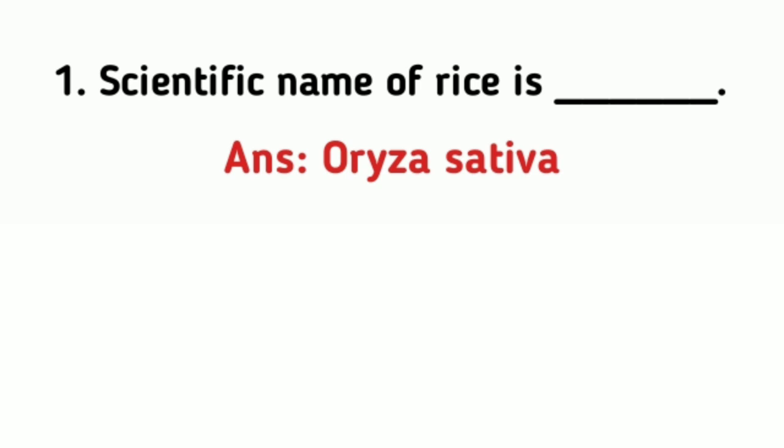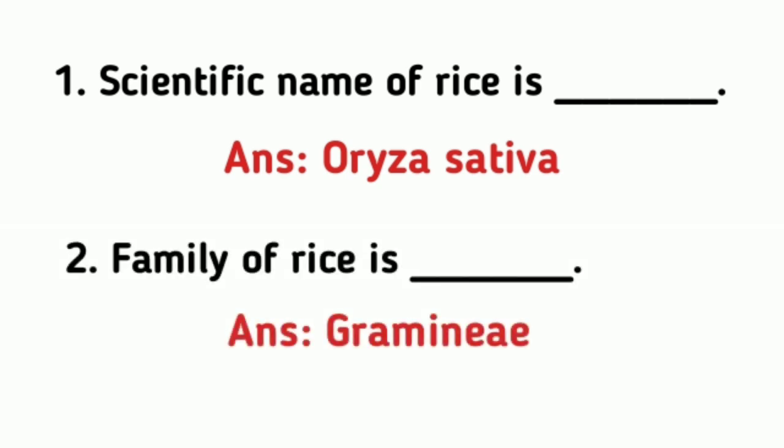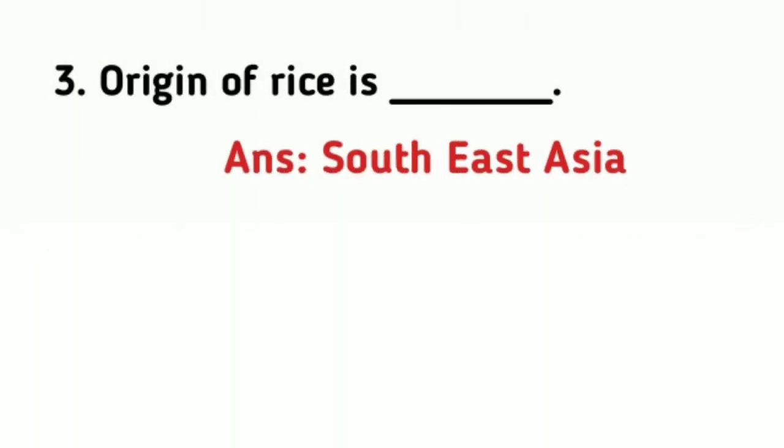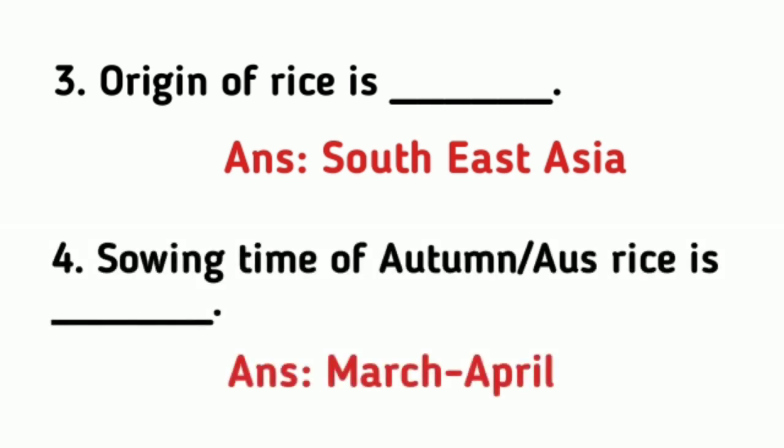The scientific name of rice is Oryza sativa and the family of rice is Graminae. The origin of rice is Southeast Asia. The sowing time of aus rice is March to April.